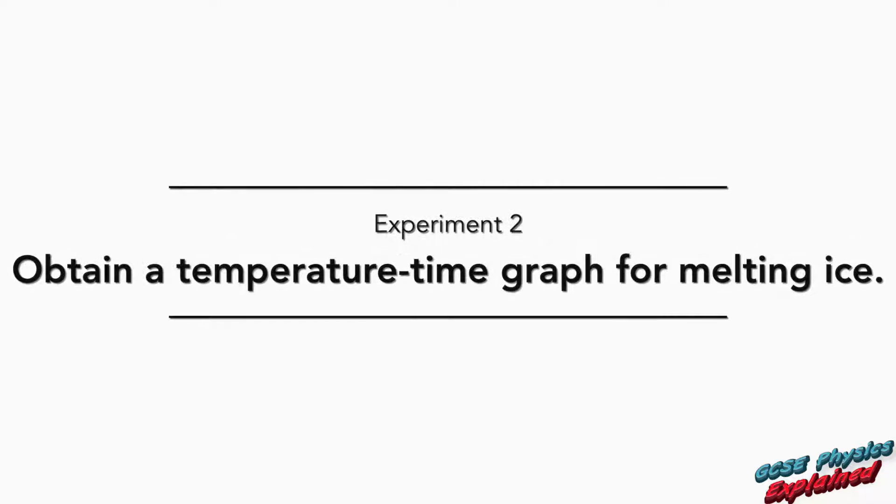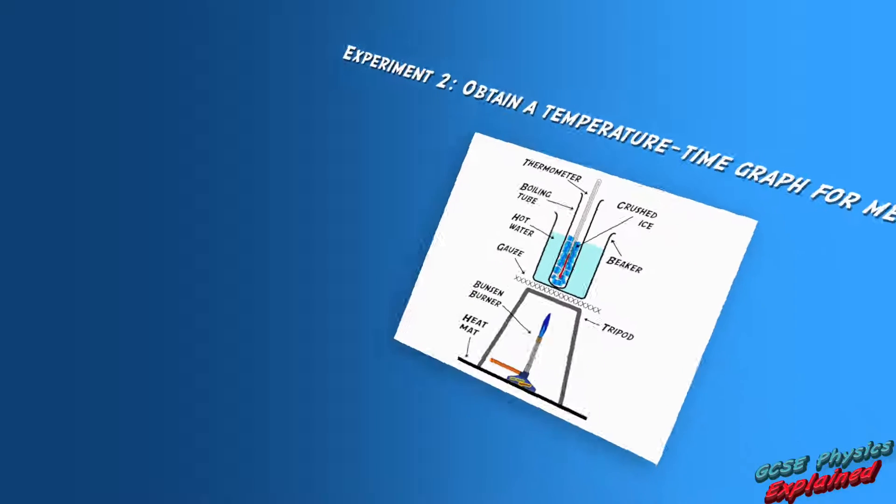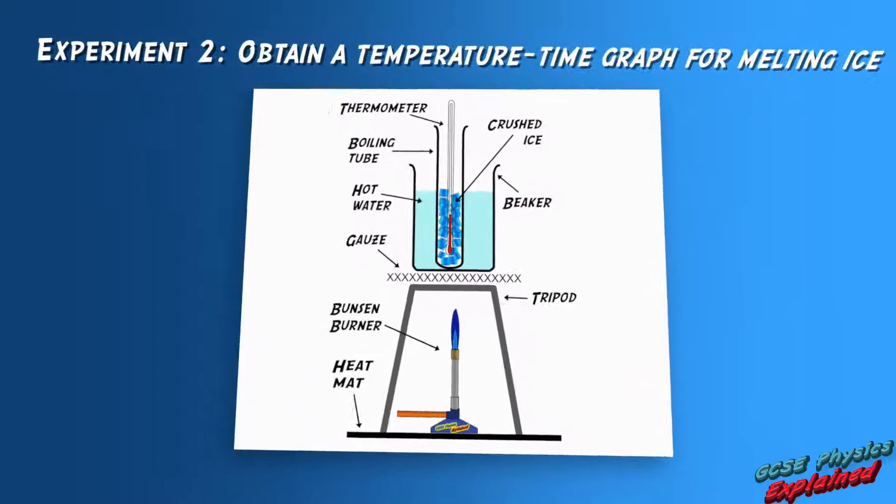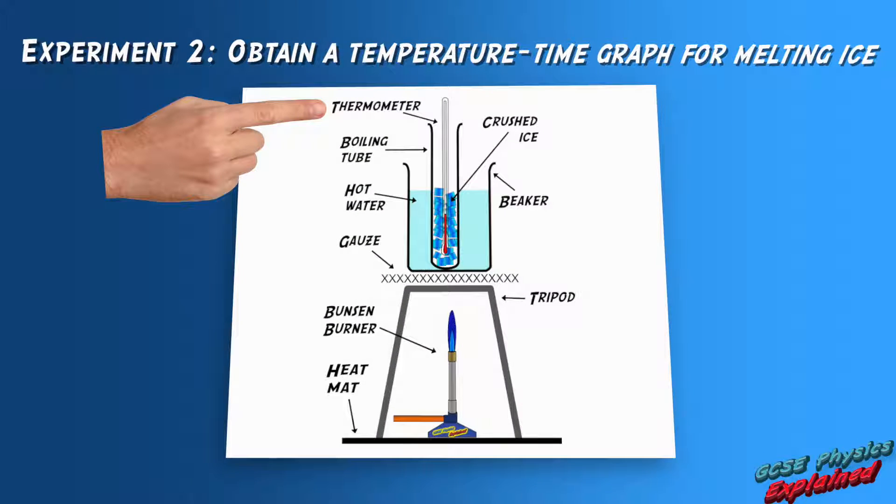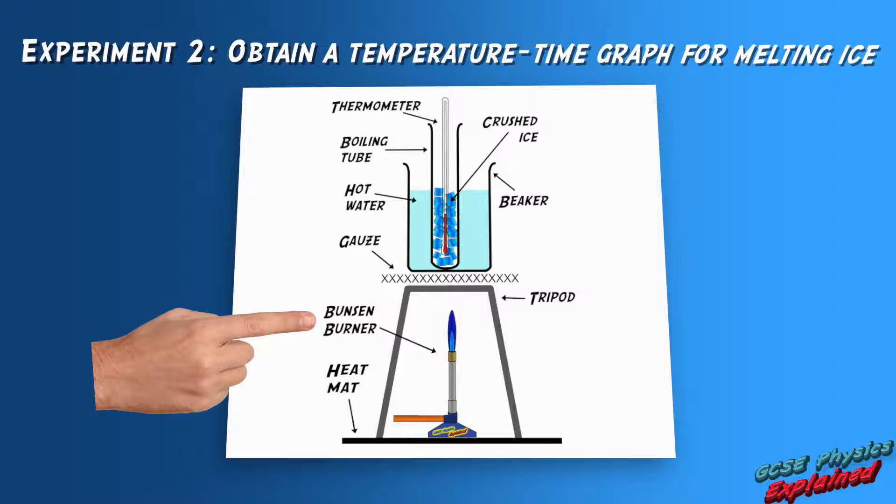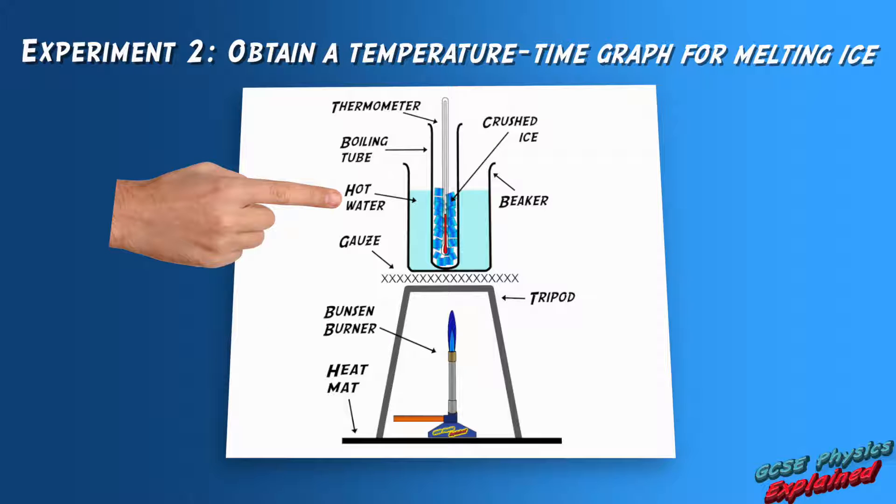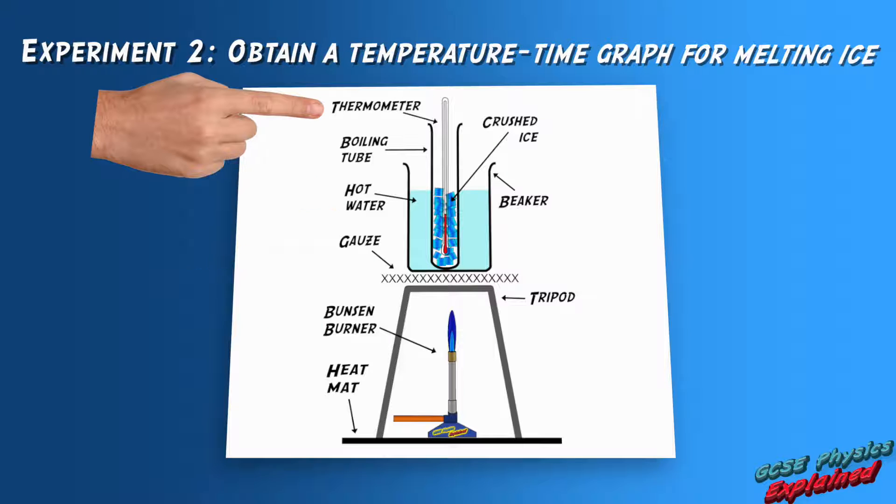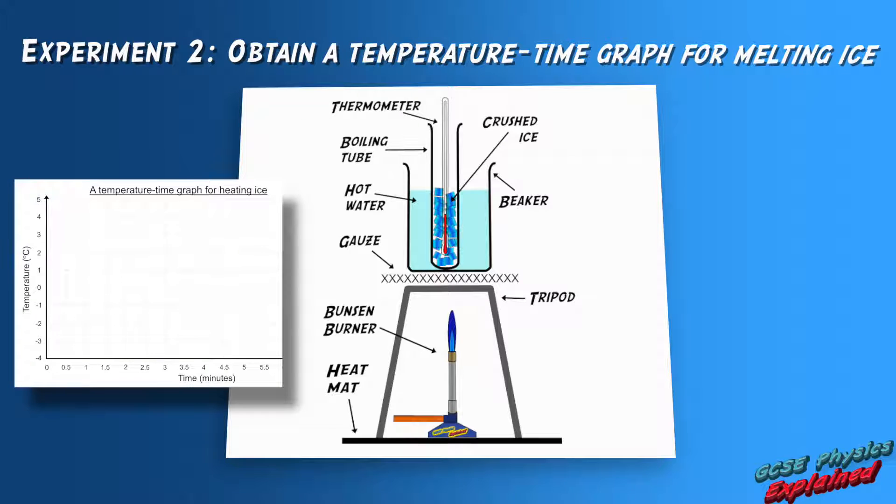Experiment two. Obtain a temperature time graph for melting ice. In the second experiment, the temperature of crushed ice must be recorded using a thermometer. The crushed ice must then be melted using a Bunsen burner and beaker of water as a water bath. The temperature must be monitored as the ice melts then the temperature time graph must be plotted.